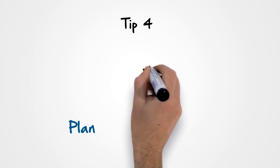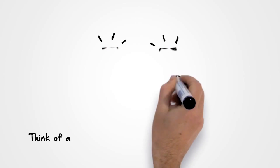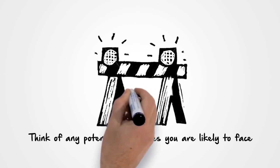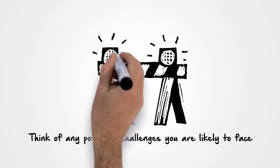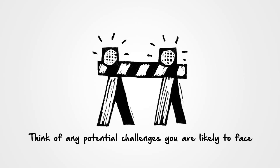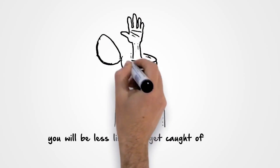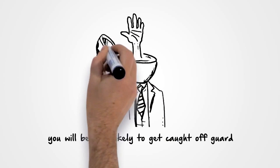Tip 4: Plan for the obstacles. Think of any potential challenges you're likely to face with the habit and plan in advance how you'll overcome them if they arise. By thinking ahead, you'll be less likely to get caught off guard and much more likely to follow through.